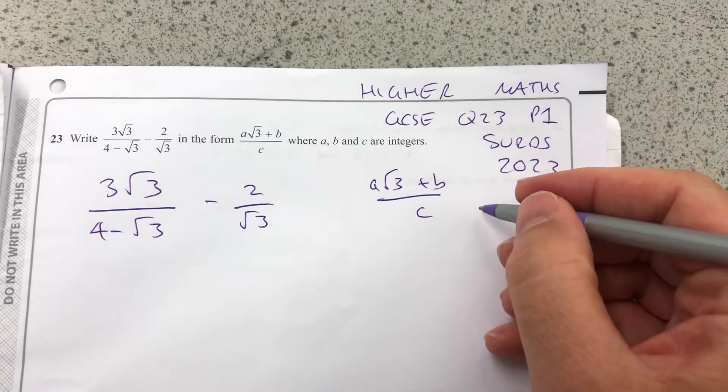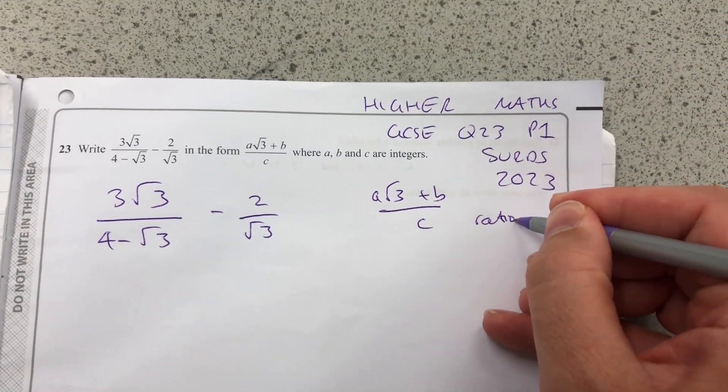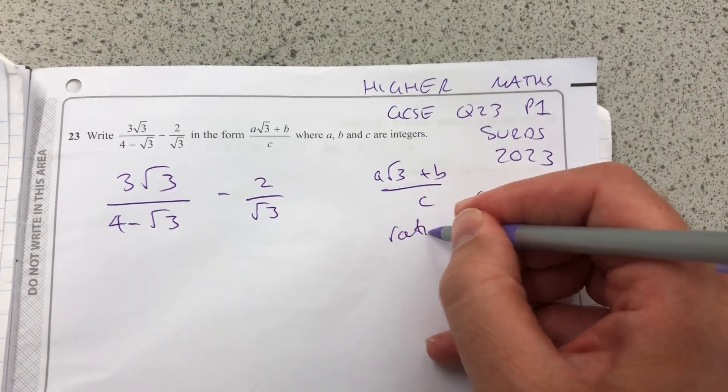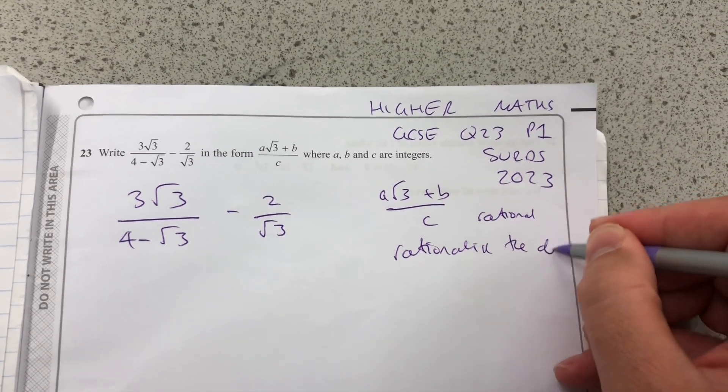The main point to see here is that that is a rational denominator. There are no surds. So what we need to do is rationalize the denominator.